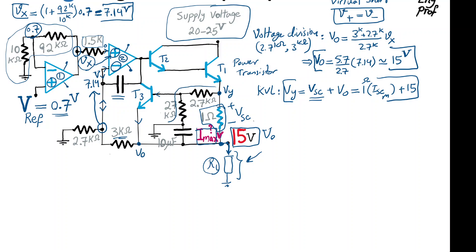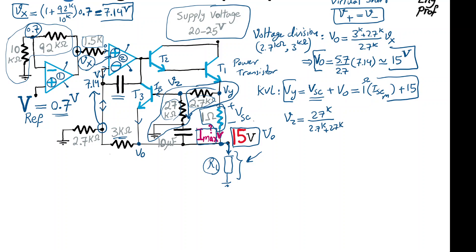There is a simple voltage division between 2.7k and 27k. To find voltage Vz, we note the base current flowing through transistor T3 is very small and negligible compared to the current flowing through 2.7k and 27k. So Vz = (27k / (2.7k + 27k)) × Vy, which gives us (10/11) × Vy.